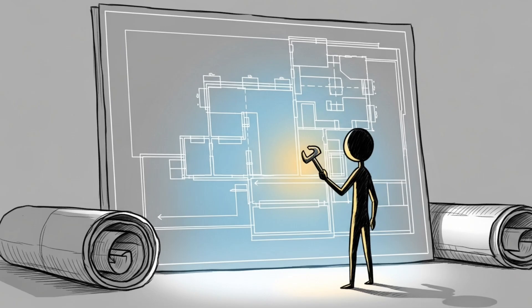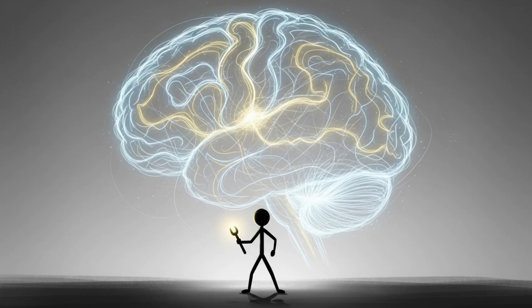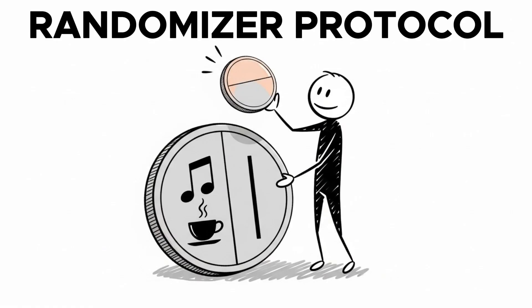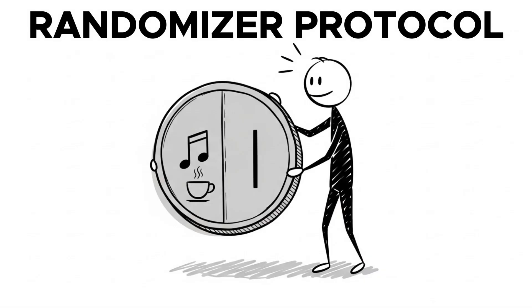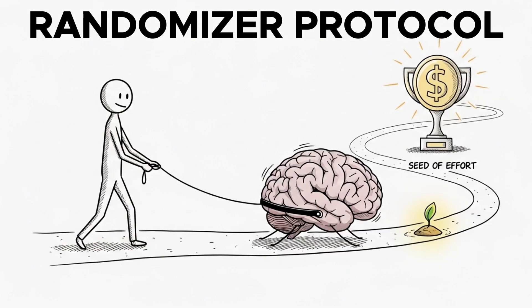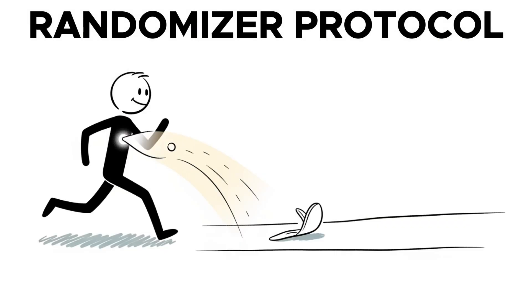Here is your actionable blueprint for restoring your brain sensitivity and taking back control of your dopamine system. Tool number one, the randomizer protocol. Next time you engage in a habit you want to sustain, introduce randomness. Flip a coin. Heads, bring your music and coffee. Tails, go without them. This sounds counterintuitive, but it's a deliberate act of preserving your dopamine system's sensitivity. You're training your brain to find the inherent value in the effort, not just the external reward.